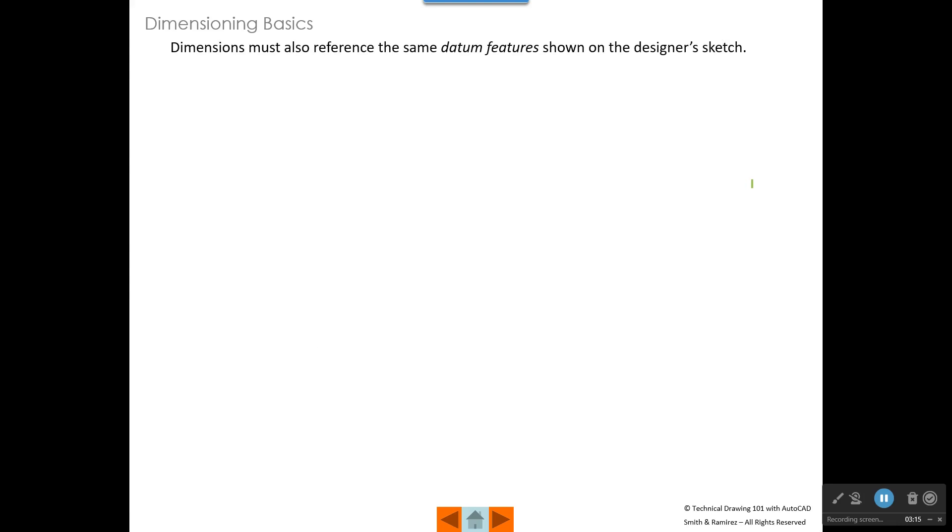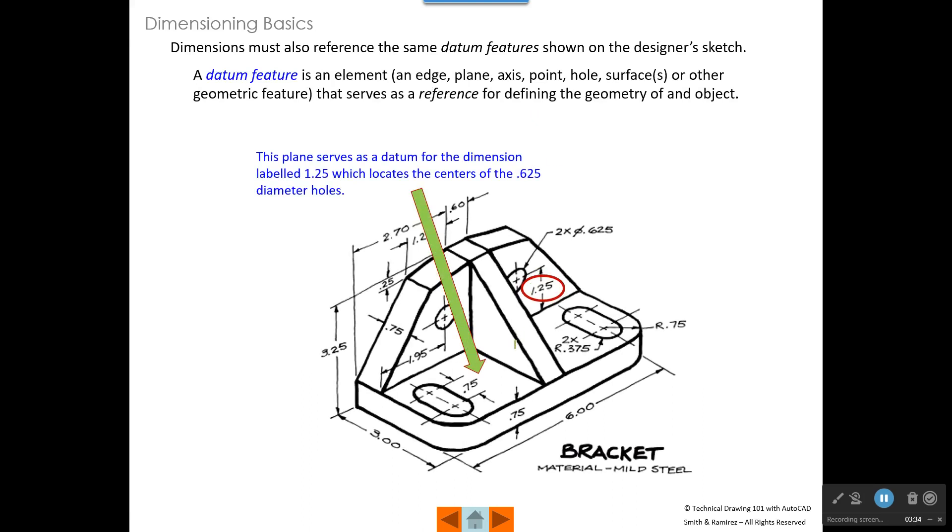Dimensions should also feature the same datum features. They should reference the same datum features shown in the designer sketch. A datum feature is an element like an edge, a plane, an axis, a point, a hole, a surface or other feature that serves as a reference for defining the geometry of an object.